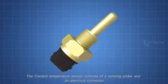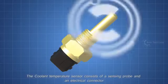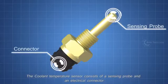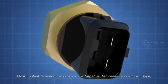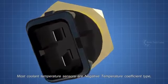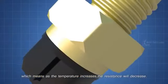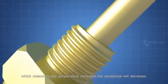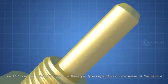The coolant temperature sensor consists of a sensing probe and an electrical connector. Most coolant temperature sensors are negative temperature coefficient type, which means as the temperature increases, the resistance will decrease. The CTS can be a 2 pin type or a 3 pin type, depending on the make of the vehicle.